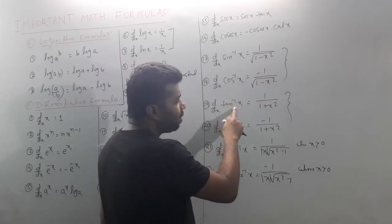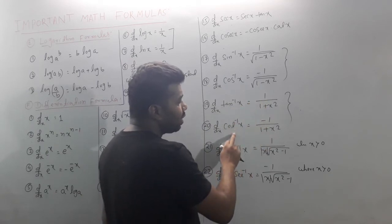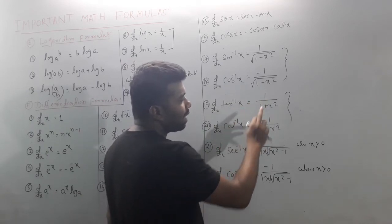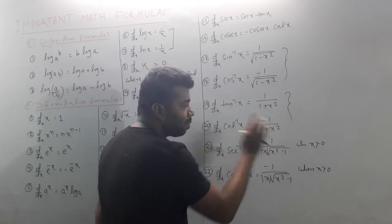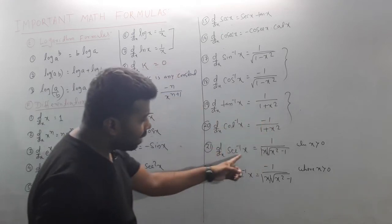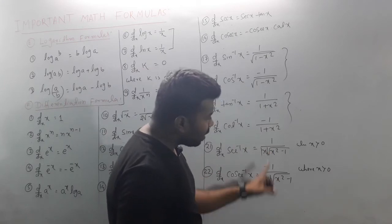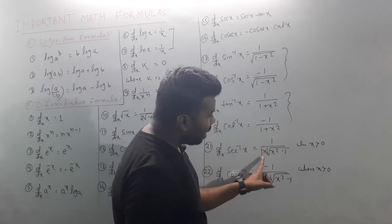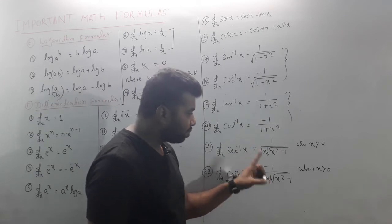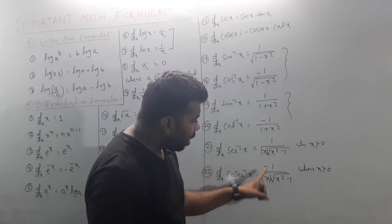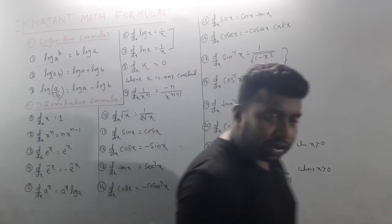d/dx of sin⁻¹(x) = 1/√(1-x²). d/dx of cos⁻¹(x) = -1/√(1-x²). d/dx of tan⁻¹(x) = 1/(1+x²). d/dx of cot⁻¹(x) = -1/(1+x²). d/dx of sec⁻¹(x) = 1/(|x|√(x²-1)). d/dx of cosec⁻¹(x) = -1/(|x|√(x²-1)). Pause the video and note these down.